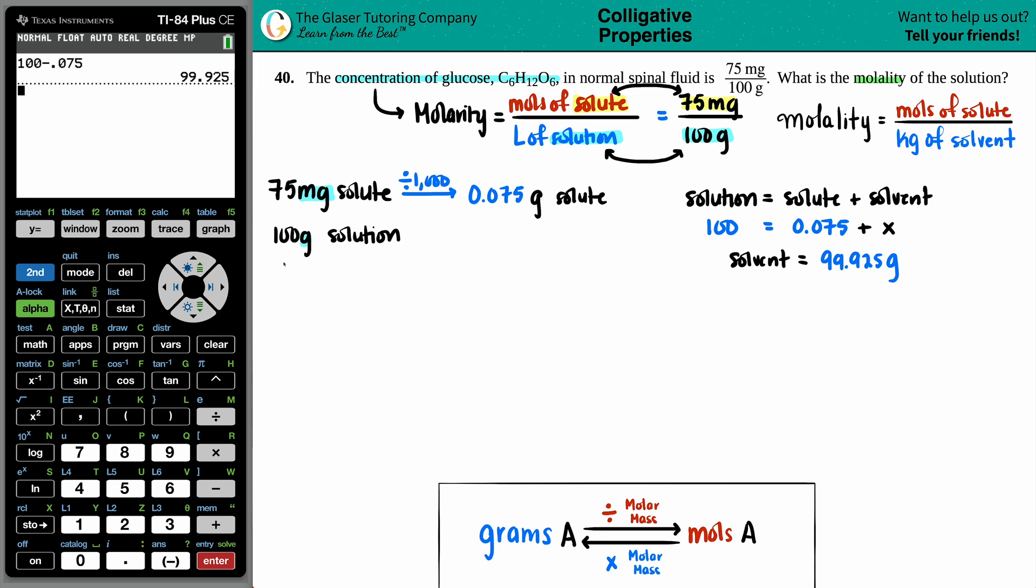Okay, now we have solute numbers and solvent numbers. We can use the molarity formula. Almost, right?